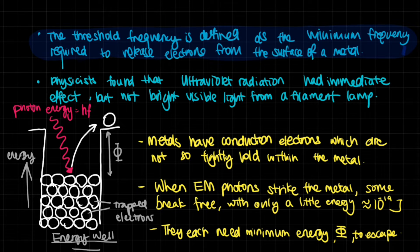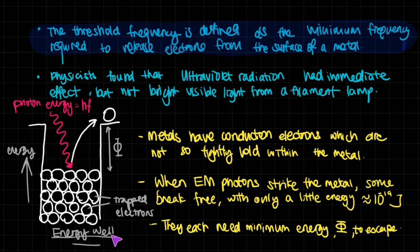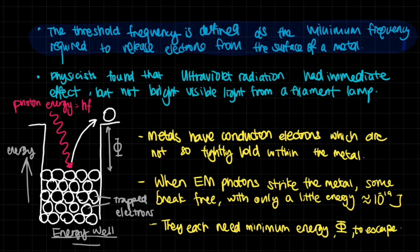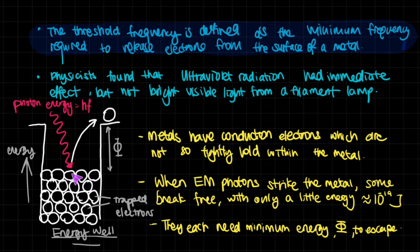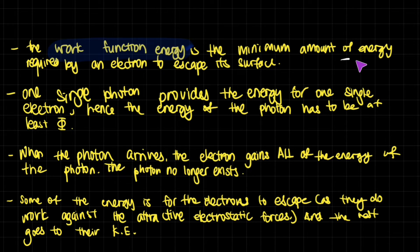A useful visualization is the energy well diagram. Picture a well — the higher you go, the more energy you have. Electrons are packed at the bottom; those at the bottom have the lowest energy, those higher up have more. To escape the well, even the uppermost electrons have to gain at least a minimum amount of energy — this minimum energy is phi (φ). When one photon hits a surface electron, it can gain enough energy to escape, and that's the photoelectric effect. Phi is the work function.